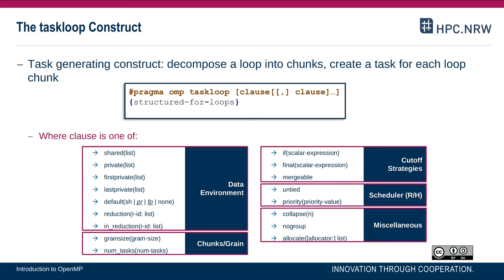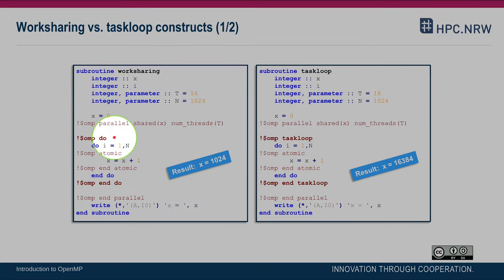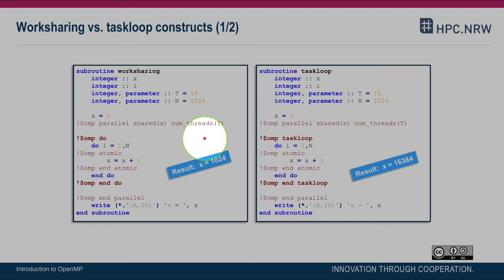Before going into details on how the loop is decomposed into chunks, I would like to look at how task loop differs from worksharing. In this code example written in Fortran, you see a comparison of omp do — the for worksharing construct equivalent in Fortran — and omp task loop. The C code is the same and the parallel region is the same: pragma omp parallel shared x numthreads t. But here we are using a task loop construct, and there we are using a do construct.